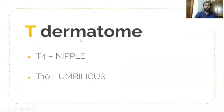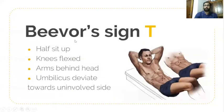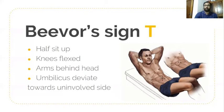For dermatomes of the thoracic spine: T4 is at the level of the nipple, and T10 is at the level of the umbilicus. For the thoracic spine myotome, Beevor's sign is performed — with 90-degree knee flexion and hands behind the head, ask the patient to do a half sit-up. If the thoracic spine is affected, the umbilicus moves from midline toward the uninvolved side.